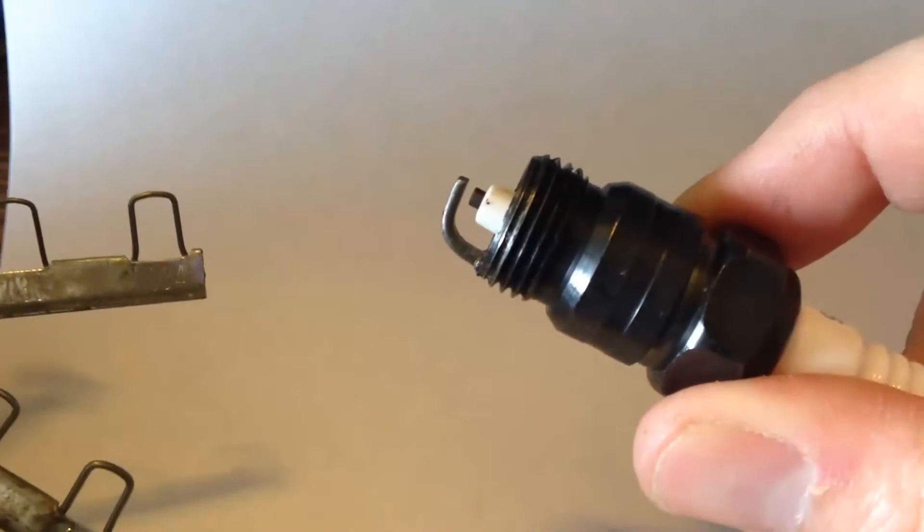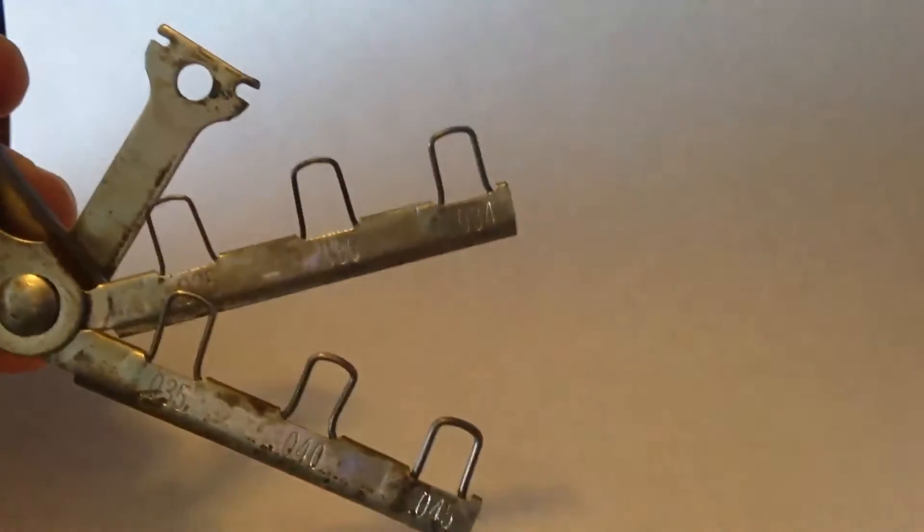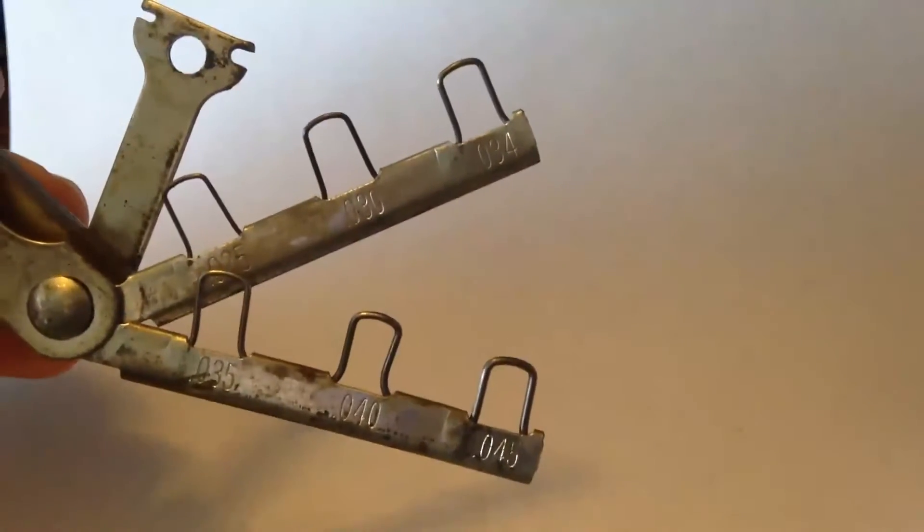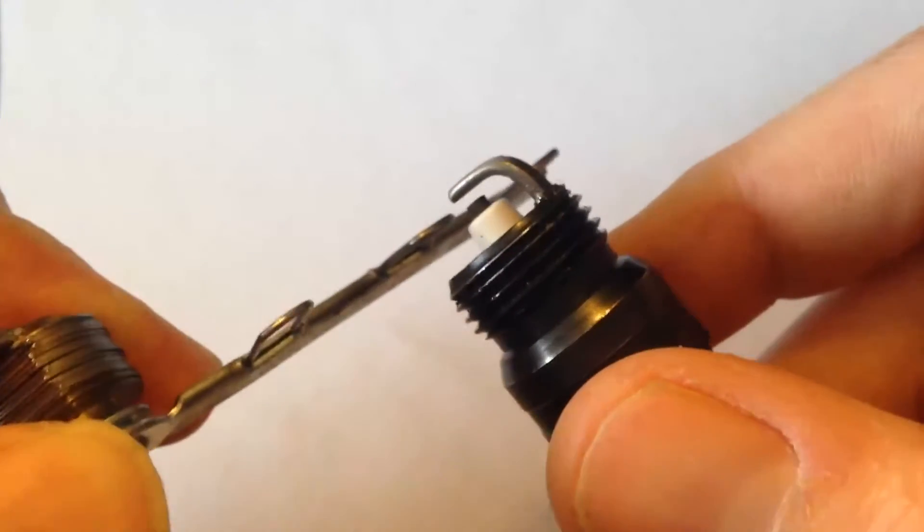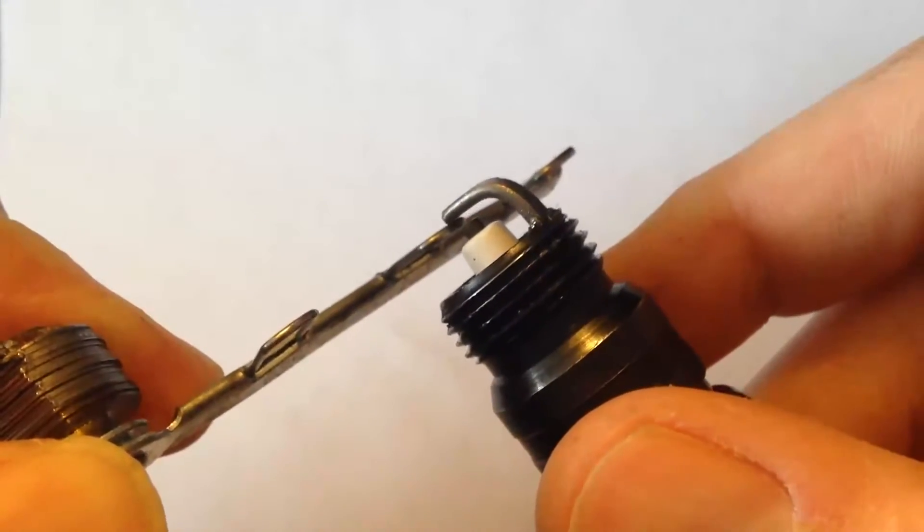Spark plugs need to be set at a certain gap. To do that, you're going to need a feeler gauge, which is readily available at any parts store. All of these are a certain thickness, and what I need to do is pass it through between the two components of the spark plug.